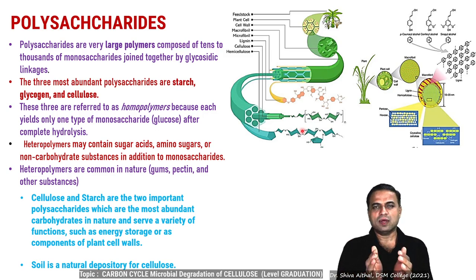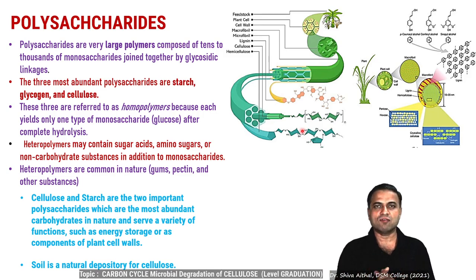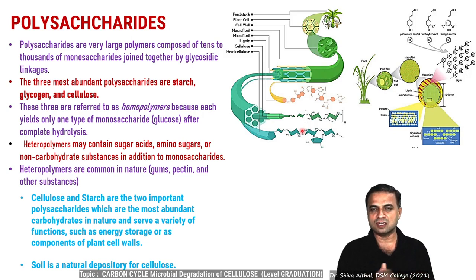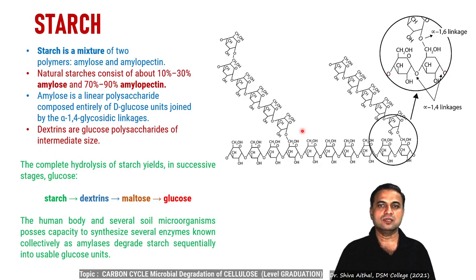As plants have dominated the earth in the form of jungles, there are still forests, rainforests, and large-scale vegetation, and humans are struggling to maintain it. With this concept — that there is a huge dominating plant presence on the earth's surface — soil is a natural depository for cellulose. Whenever a plant dies, whenever there is litter or twigs falling, it falls onto the soil, making soil a depository for these materials.